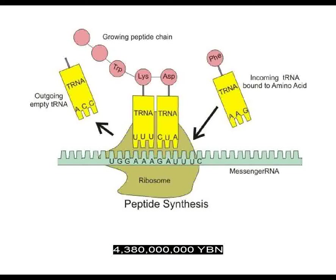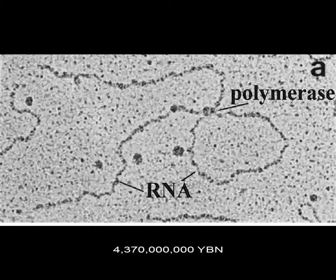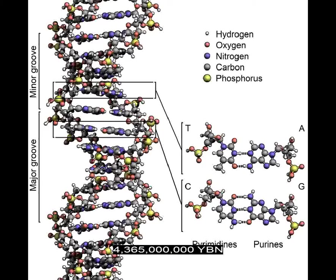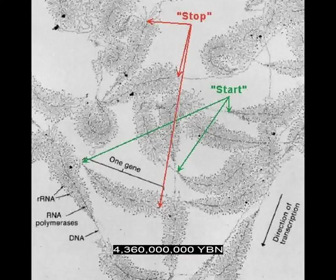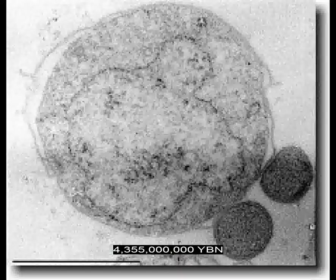Ribosomes are the cellular organelles that carry out protein synthesis through a process called translation. A protein can copy RNA — this protein is called an RNA polymerase and may be more efficient than RNA itself at copying other RNA molecules. The first deoxyribonucleic acid, DNA molecule. A protein evolves that allows DNA to be assembled from RNA. A protein can copy DNA molecules — a DNA polymerase. Transcription: a protein assembles RNA from DNA. The first cell on Earth — a bacterium. DNA is surrounded by a membrane made of proteins.